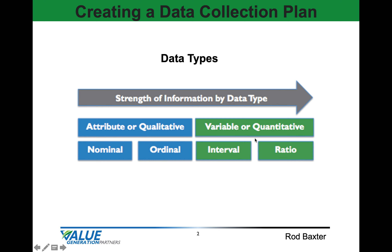Then there's variable or quantitative data. It's on a continuous type scale, and that can come in either interval or ratio — such as air pressure, time, temperature, and so on. Ratio, the most informative, is used in statistical modeling.